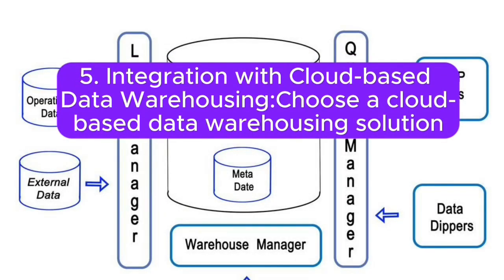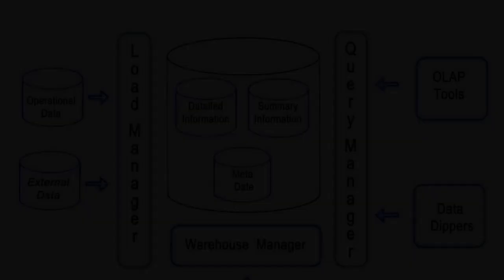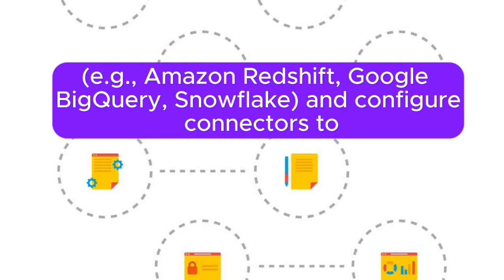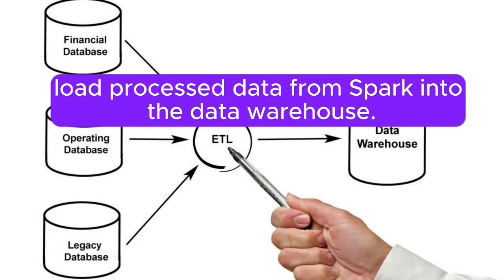5. Integration with cloud-based data warehousing: choose a cloud-based data warehousing solution — for example, Amazon Redshift, Google BigQuery, or Snowflake — and configure connectors to load processed data from Spark into the data warehouse.